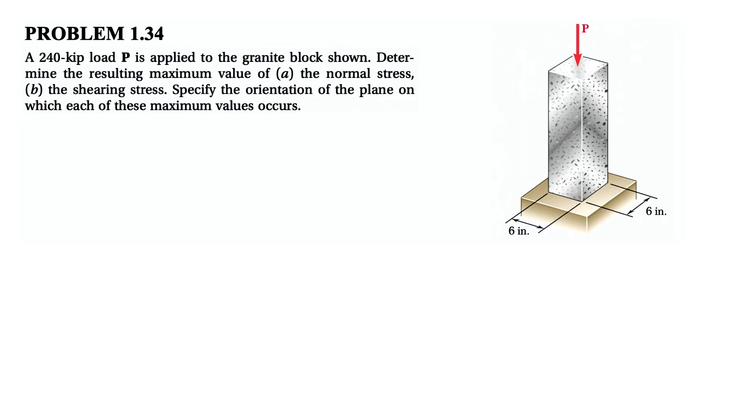Hi everyone, welcome to the channel. We're going to be solving question 34 from the first chapter of the Beer & Johnson textbook, and we have a 240 kip force P that is applied to the granite block.